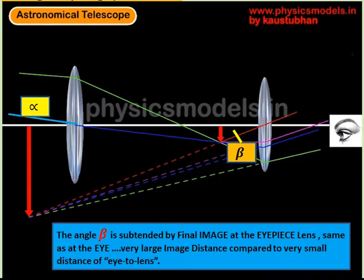Therefore, the distance between the eye and the eyepiece is considered negligible compared to the astronomical distance of the object or the astronomical distance of the image. Therefore, the angle beta is considered to be subtended at the eyes, same as at the eyepiece.